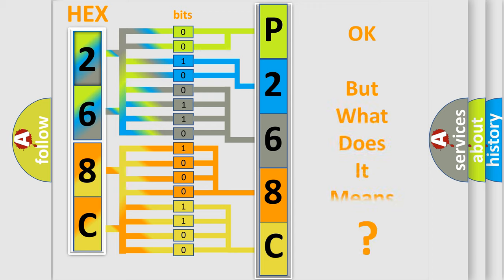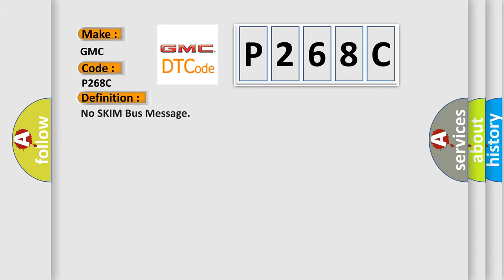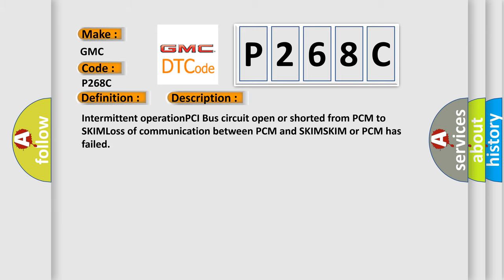The number itself does not make sense to us if we cannot assign information about what it actually expresses. So, what does the diagnostic trouble code P268C interpret specifically for GMC car manufacturers? The basic definition is: No SKIM bus message. A short description of this DTC code is: Intermittent operation, PCI bus circuit open or shorted from PCM to SKIM, loss of communication between PCM and SKIM, or SKIM or PCM has failed.